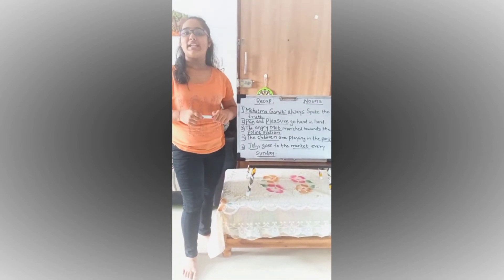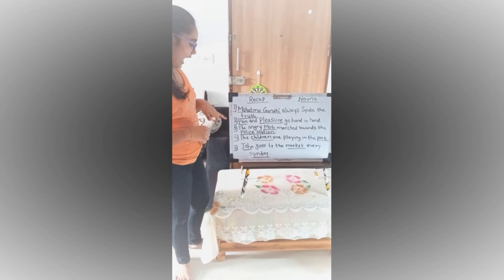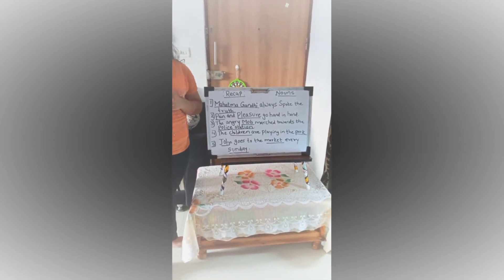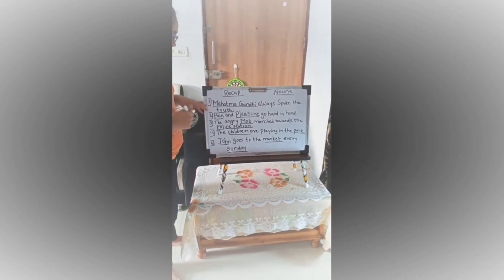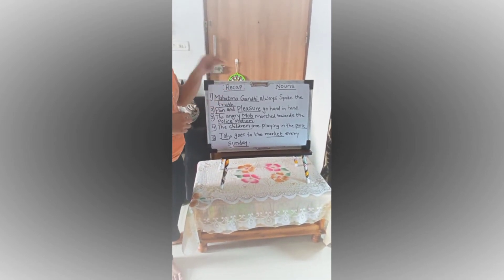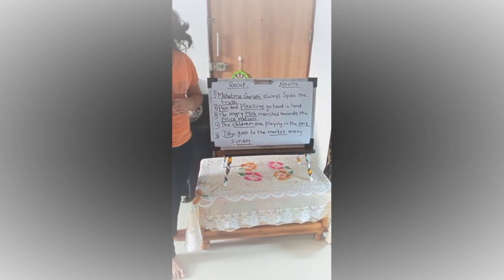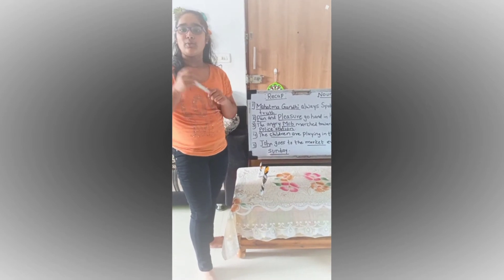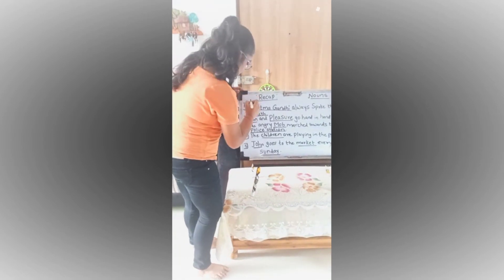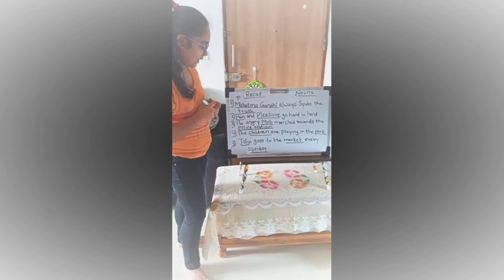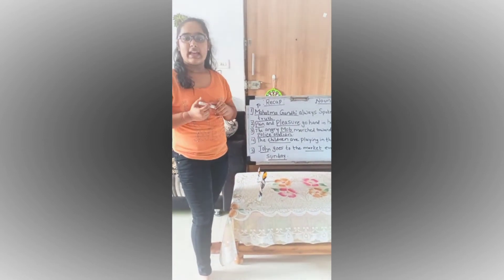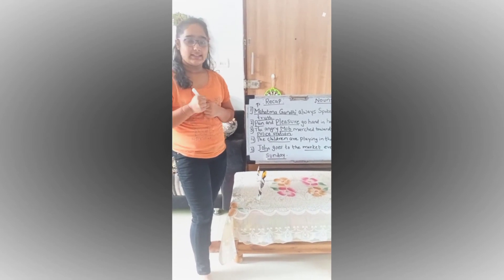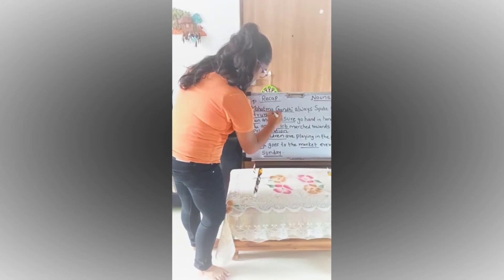Now let's recap what we have learnt. I have five sentences and you need to identify which type of noun each word is. First: Mahatma Gandhi always spoke the truth. Mahatma Gandhi is the proper noun because it is the name of only one person. And truth — truth is a quality, that's why it's an abstract noun. We cannot touch it, just feel it.